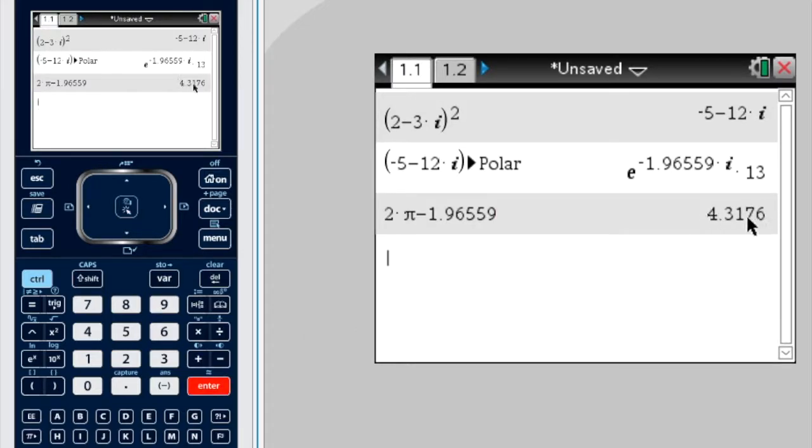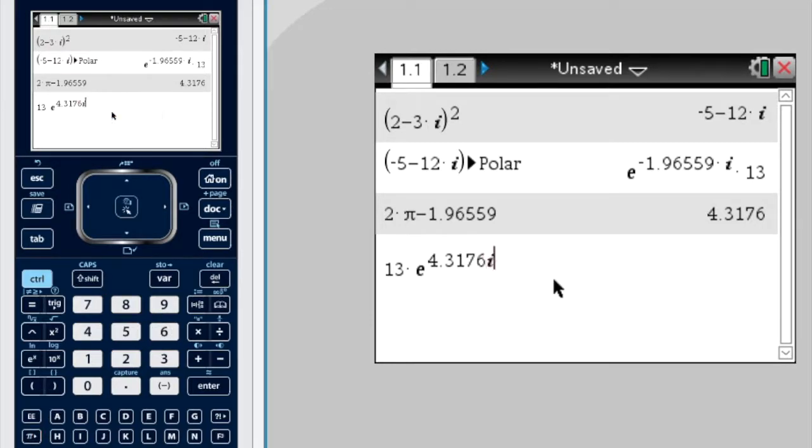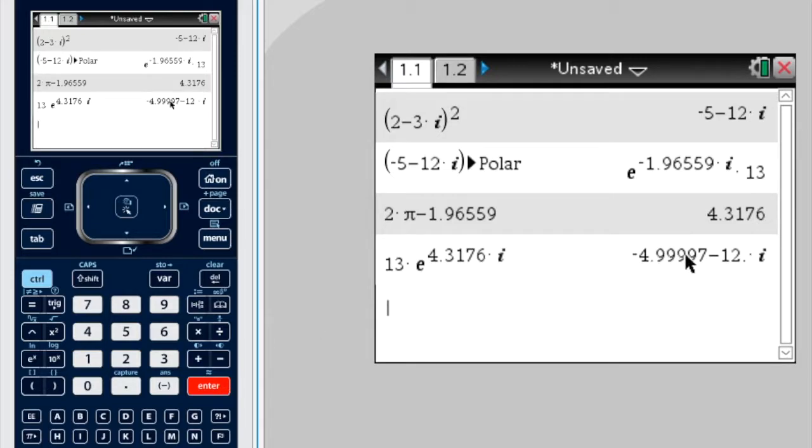Okay, so that's the equivalent positive angle that you can use in place of that. Let's actually see if that works. So, for instance, if I put that in instead of that, so I do 13 times e to the 4.3176, and then i, let's see what we get.